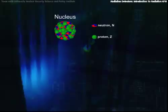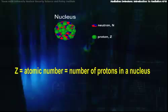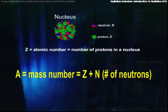Since we're defining things, let's be specific about terms I've been throwing around. Z, the atomic number, is the number of protons in a nucleus. A, the mass number, is the sum of Z and the number of neutrons.